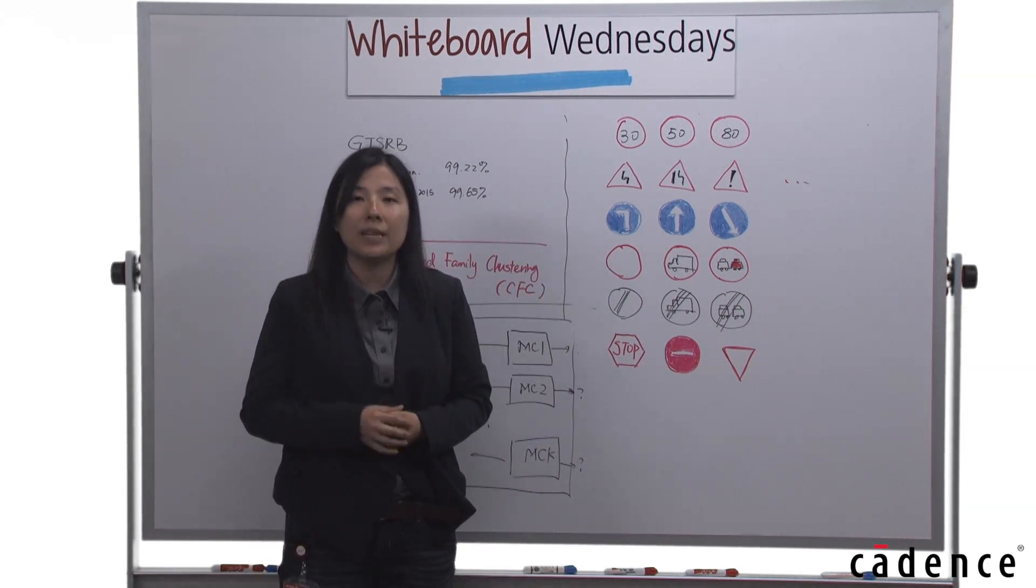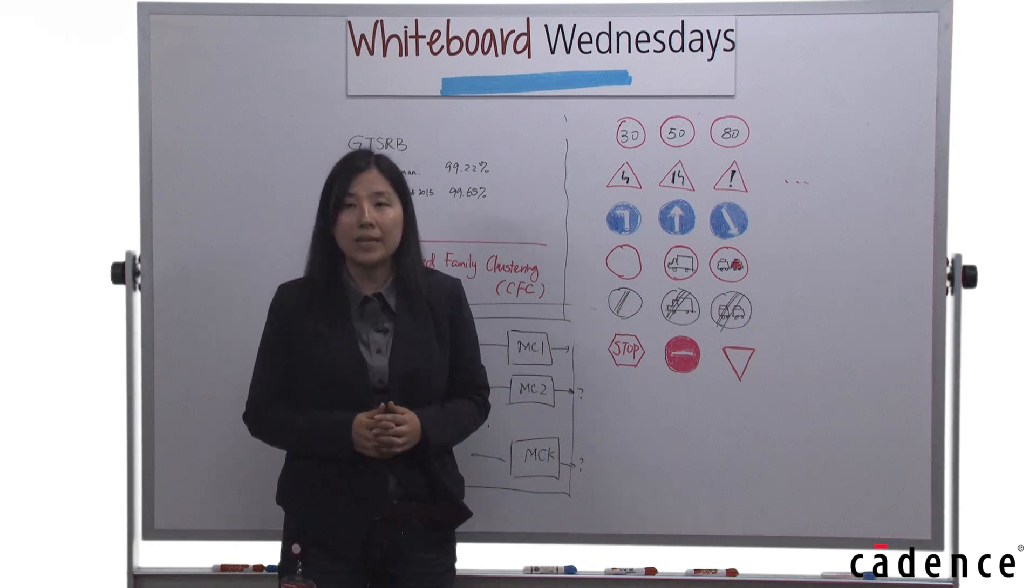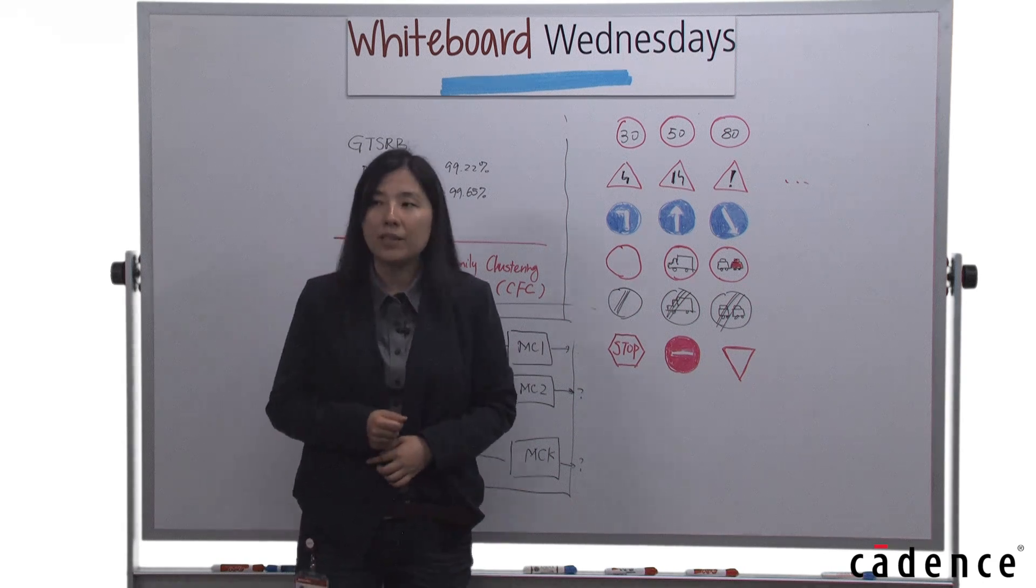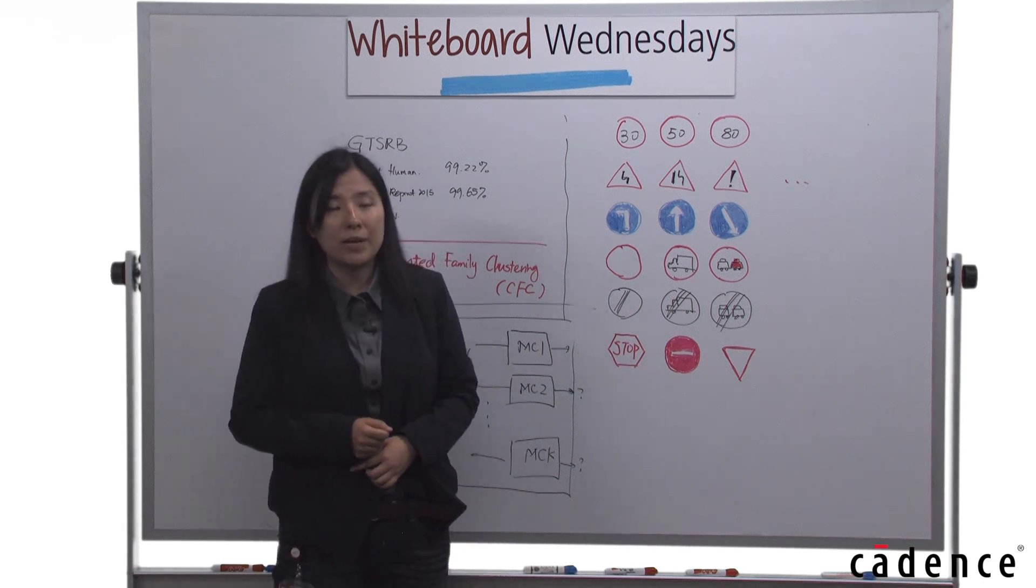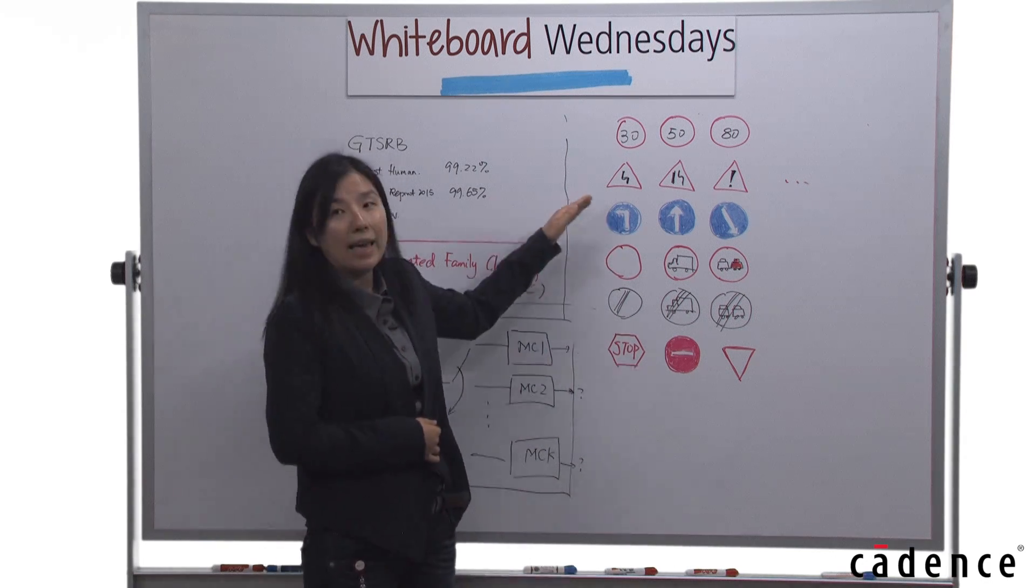We train the network and then process all the signs in the training dataset to label all of them. By doing this, every single sign in the training set will have a destination, either set A or set B.